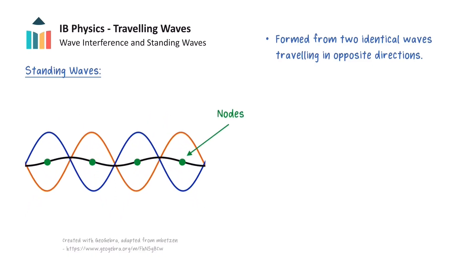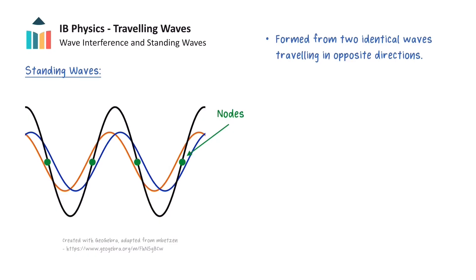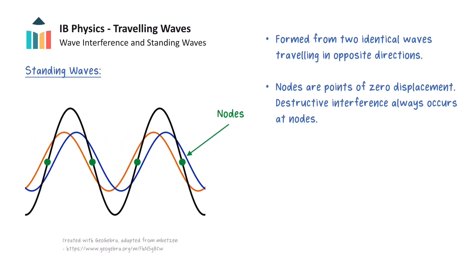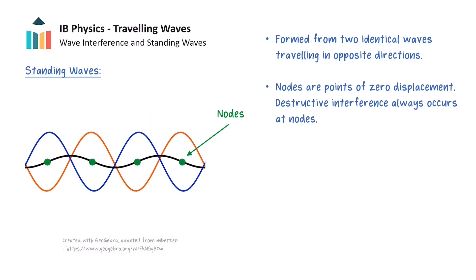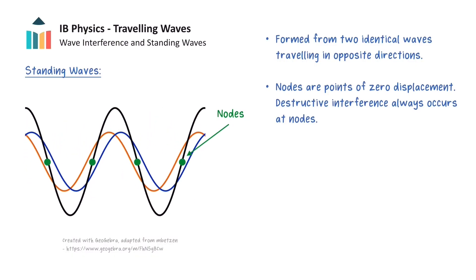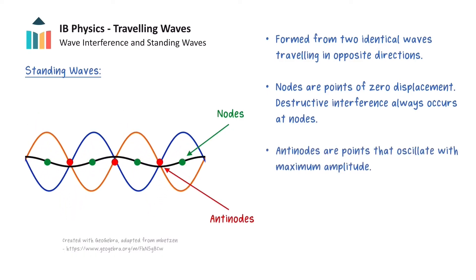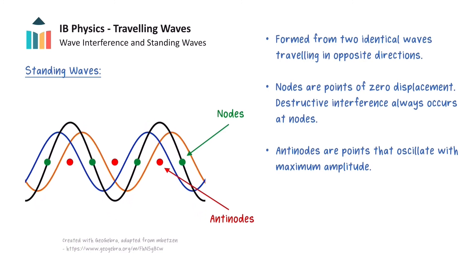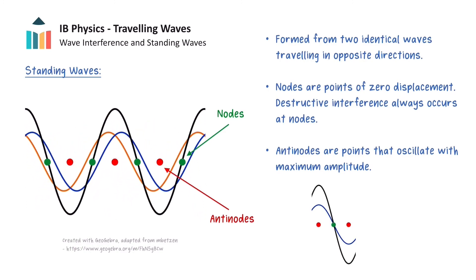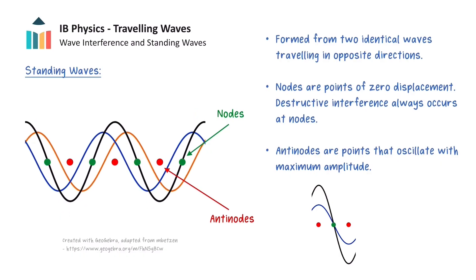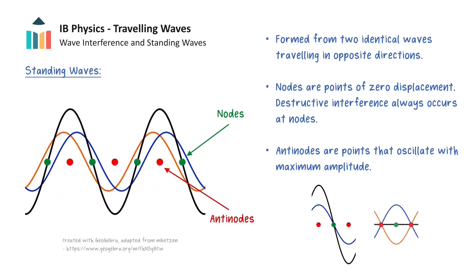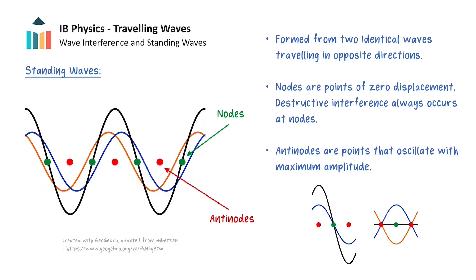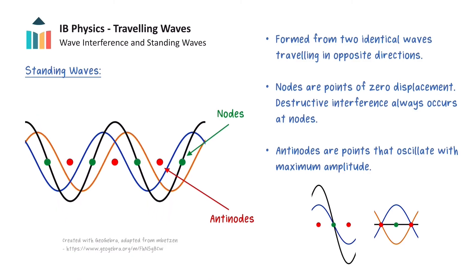These points are called nodes and are spaced half a wavelength apart. At the nodes, the waves are always in antiphase, meaning that destructive interference always occurs at these points and causes the waves to fully cancel out. In addition, there are points on the standing wave called antinodes in between each pair of nodes that oscillate with maximum amplitude. At antinodes, the maximum amplitude of oscillation is achieved when there is constructive interference. But notice how destructive interference also occurs at these points, since the waves fully cancel out at specific instances of time.